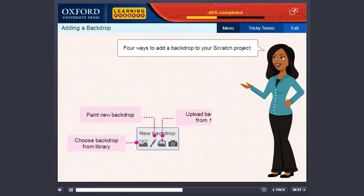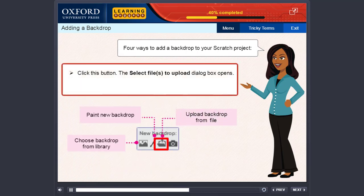Upload backdrop from file. Click this button. The select files to upload dialog box opens. Select the desired picture and click open.